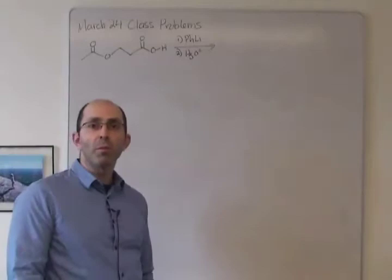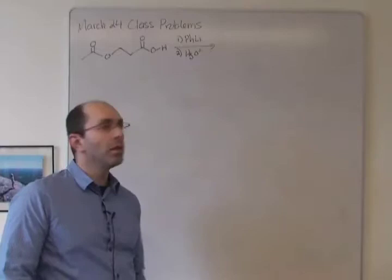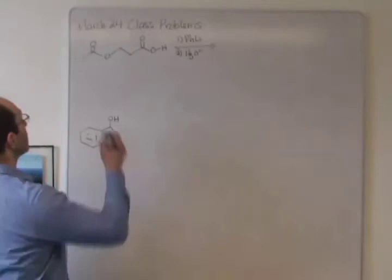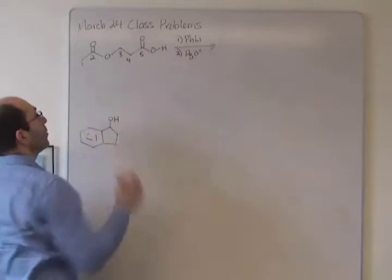I want you to be able to do these problems quickly and in multiple ways. For this one, it's really important to be able to just predict the products, and then it's also important to draw a mechanism to show how those products are formed. The first thing I would do is number the carbons in the starting material so that I don't lose any carbons along the way.